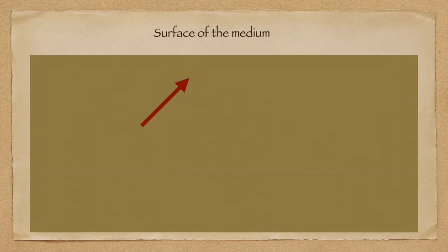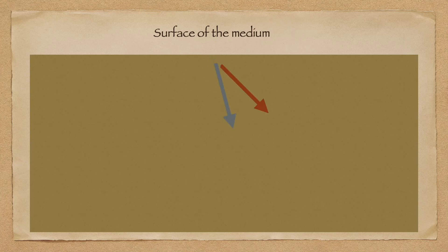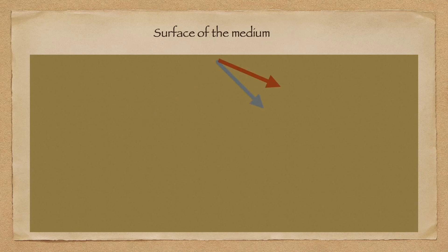Rayleigh waves are a specific class of seismic wave that are generated when P waves and S waves traveling through a body are reflected from the surface of that body. These reflections cause quite complicated interactions. For instance, a P wave striking the surface of a body at an angle will have some of its energy reflected as a P wave and some as an S wave, as illustrated in this diagram. Similarly, an S wave incident on the surface will have some of its energy reflected as a P wave and some as an S wave.